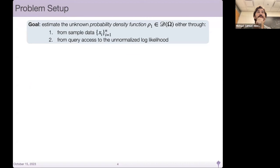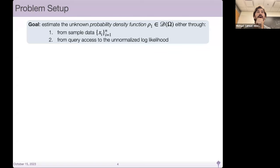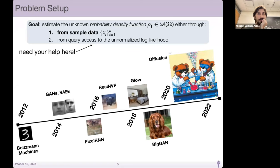To set up some notation, the problem setup is: given some probability density function rho one, we either have sample data from this or query access to the unnormalized log likelihood rho one. Our goal is to estimate this likelihood and to be able to sample from it. This paradigm has been very successful in the past 10 years — we've gone from drawing tiny digits to being able to query text-to-image diffusion models about bears being chemists in a cartoonish fashion.